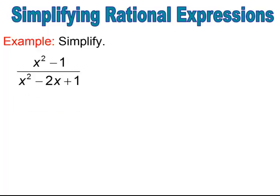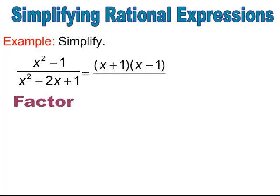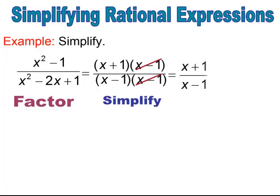This next one requires factoring both the numerator and the denominator. In the numerator, I see the difference of two squares, which factors to x plus 1 and x minus 1. In the denominator, I need factors of positive 1 that add up to negative 2, giving me negative 1 times negative 1 — so I get x minus 1, x minus 1. Then I simplify by canceling common factors, and the simplified rational expression is x plus 1 over x minus 1.